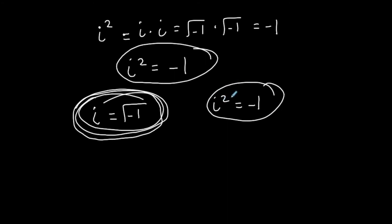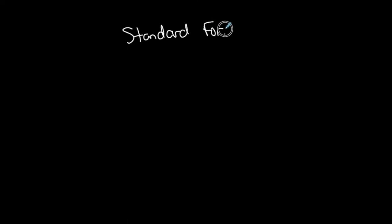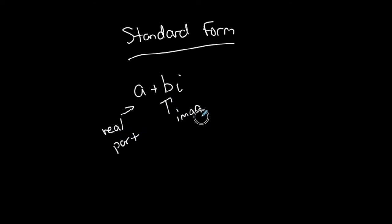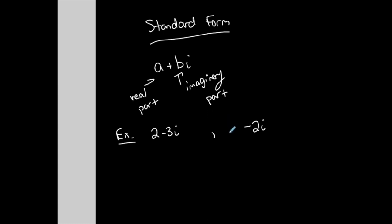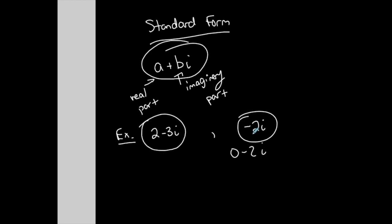Complex numbers come in many forms, but the standard form of a complex number is a plus bi, where a is called the real part and b is called the imaginary part. For example, 2 minus 3i has a real part of 2 and an imaginary part of negative 3. For a complex number like negative 2i, the a part is assumed to be zero, so it's still a complex number in standard form — we just don't write the zero. That's the standard form of complex numbers.